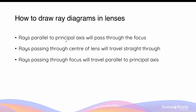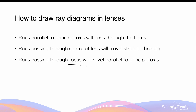The rules of drawing optical rays in lenses are similar as in mirrors. The first rule is that light rays which travel parallel to the principal axis will pass through the focus after they undergo refraction. Light rays which pass through the center of the lens will travel straight through, unaffected by refraction. And finally, light rays which pass through the focus of the lens before going through the lens will end up traveling parallel to the principal axis after refraction.